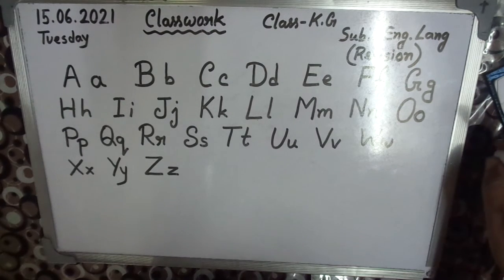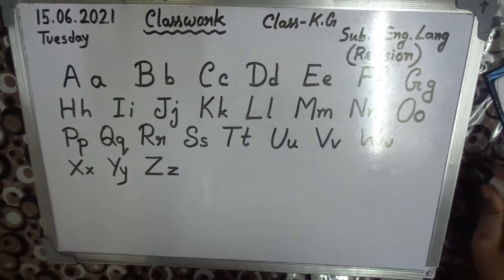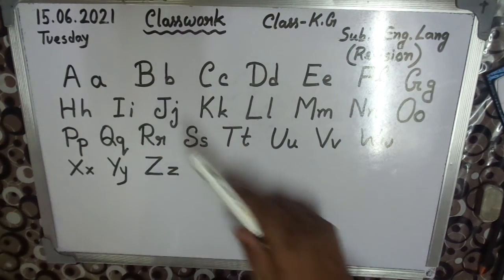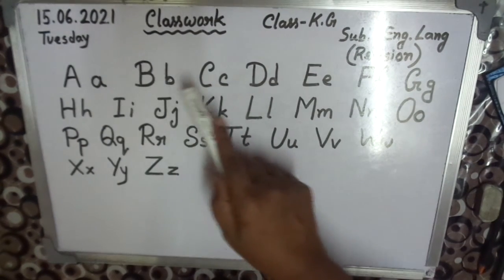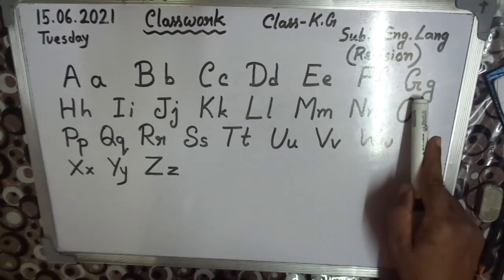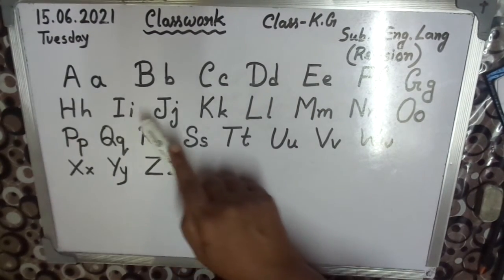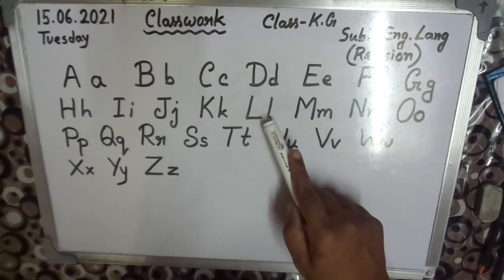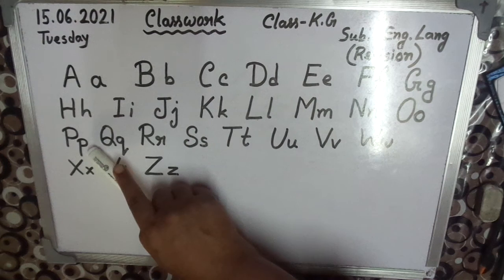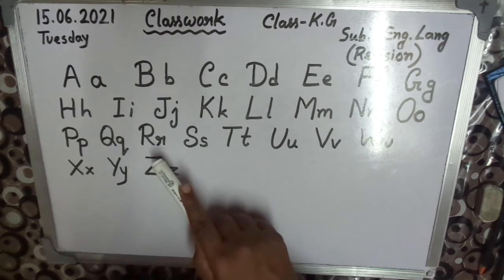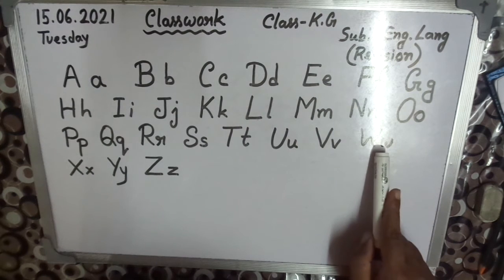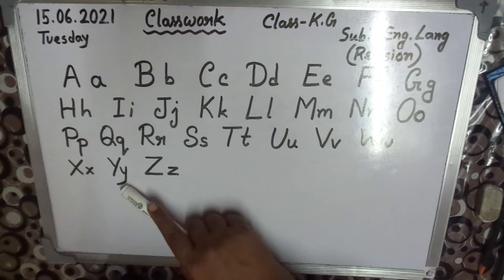I hope everyone understood. Practice — capital A, B, C, D, E, F, G, H, I, J, K, L, M, N, O, P, Q, R, S, T, U, V, W, X, Y, Z.